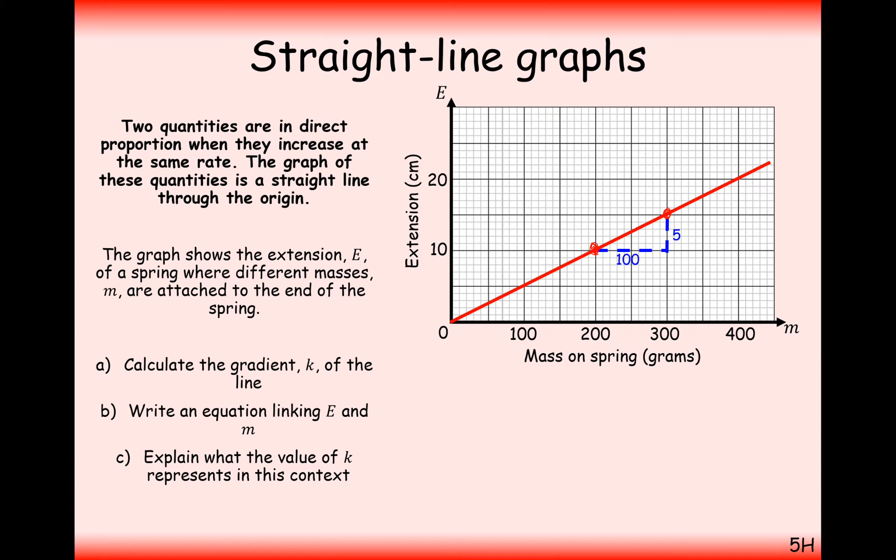Taking these two values here, we can go right by 100 up by 5, so doing a little difference in y over difference in x equation. That's exactly the same as y2 minus y1 divided by x2 minus x1, it's just written in a different way.